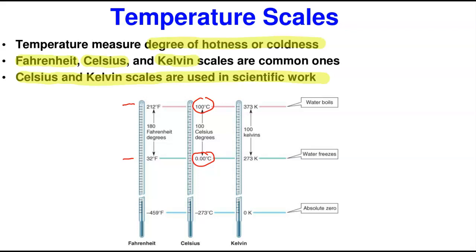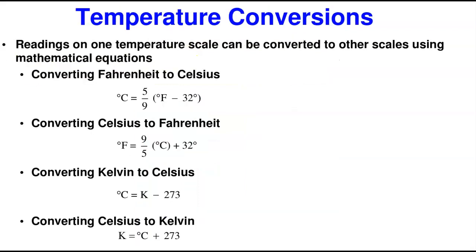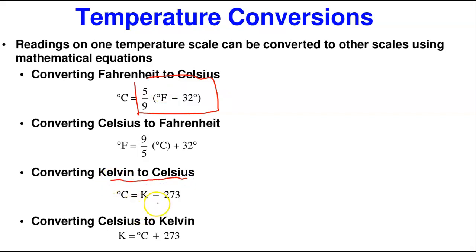These values are not something you need to memorize — they will always be given to you in your exams. To convert from Fahrenheit to Celsius, use the formula: °C = (5/9)(°F − 32). To convert from Celsius to Fahrenheit, use the opposite rearrangement: °F = (9/5)(°C) + 32. For Kelvin to Celsius, simply subtract 273: °C = K − 273. For Celsius to Kelvin, add 273: K = °C + 273. We'll use these formulas to solve a few temperature problems.